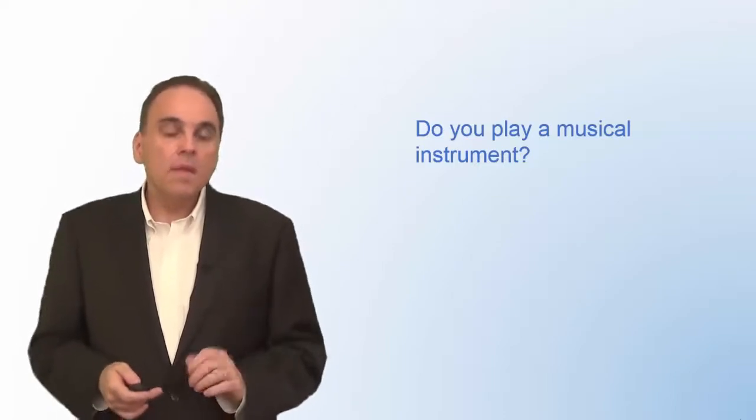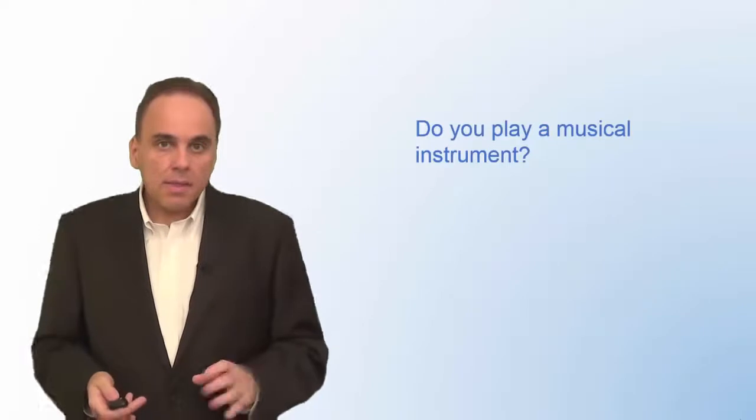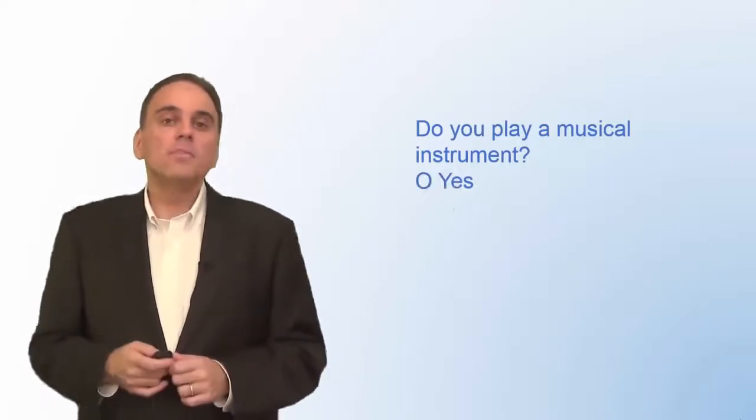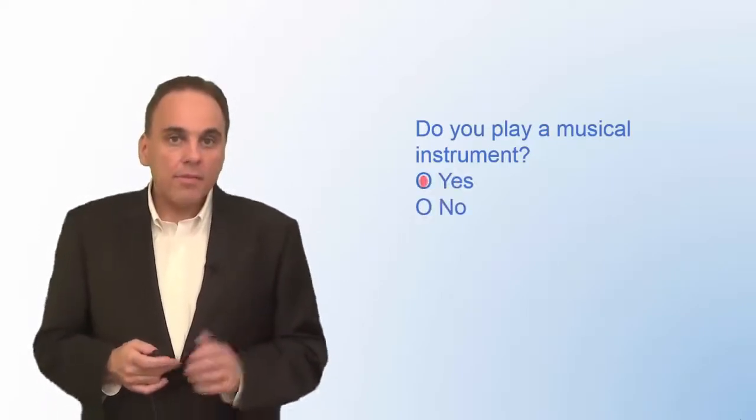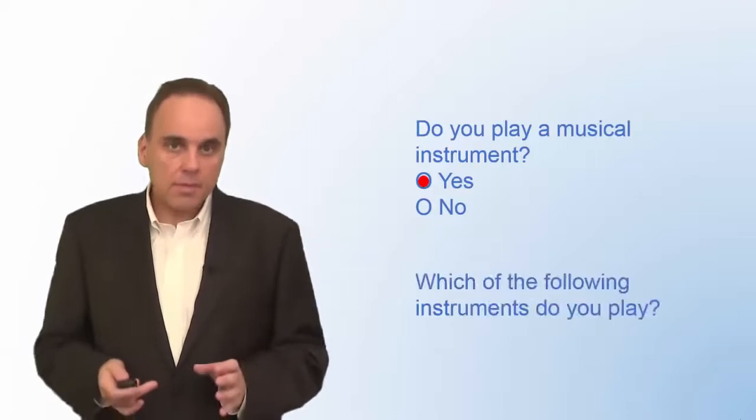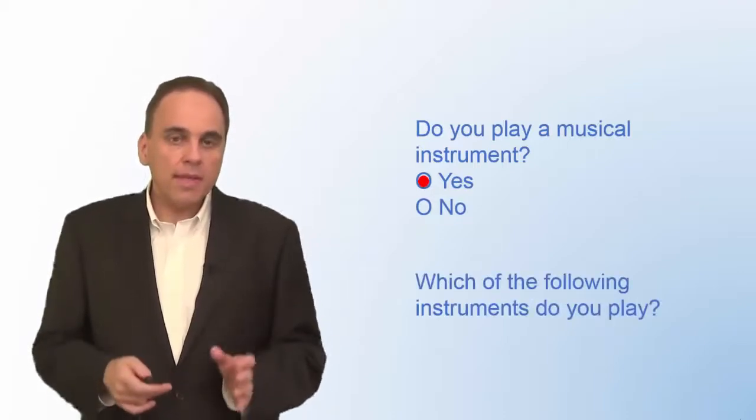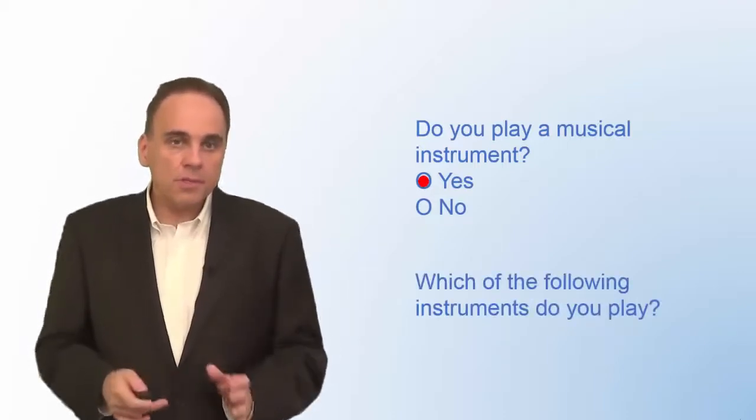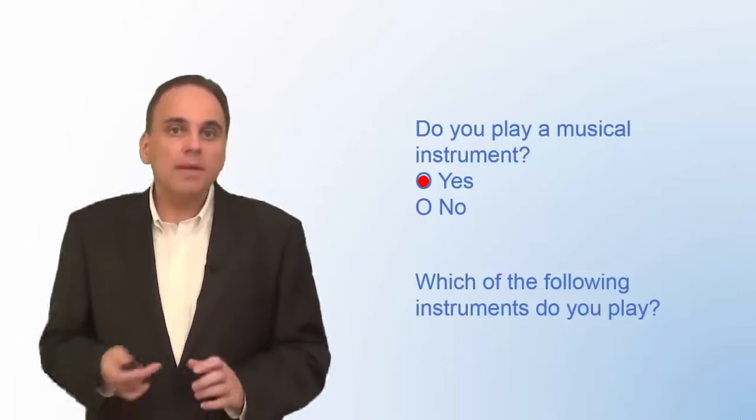For example, look at these two questions. Do you play a musical instrument? And then, which of the following instruments do you play? The first question is a branching question. Only if the respondent answers yes to the first question should the second question even appear.